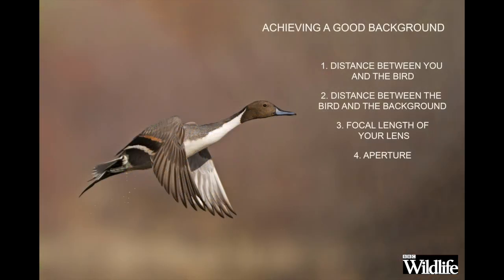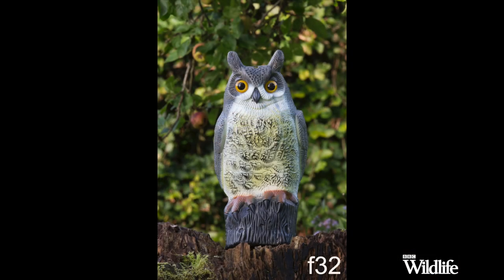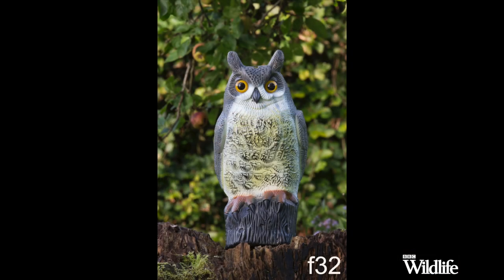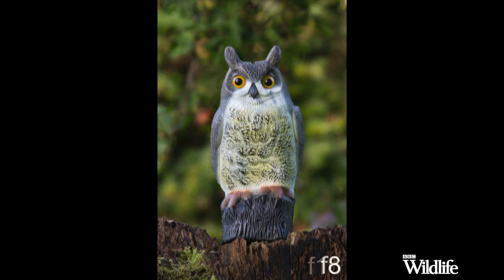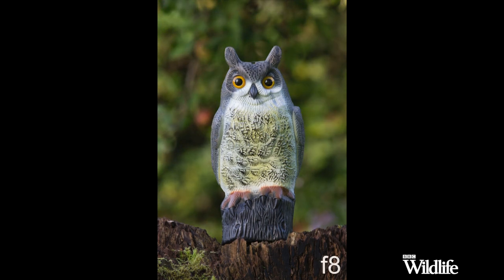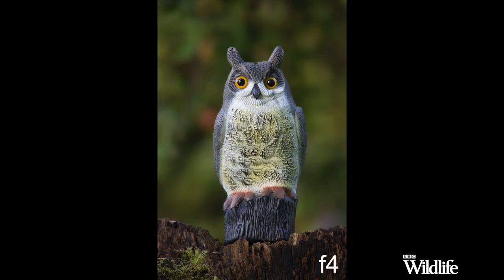The aperture you choose is absolutely critical and it's better to shoot at the widest aperture possible. This ensures a shallow depth of field, a small amount in focus, which in turn helps to blur the background. Have a look at these images of my pet owl — they speak for themselves. Look at the difference in the background with each jump in aperture: F32, F16, F8, and finally F4. With F4, the hedge behind has almost disappeared — all the detail is blurry and it's not competing with the pet owl for your attention.